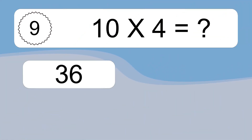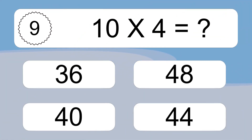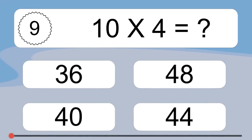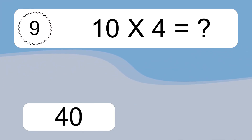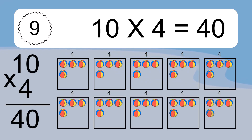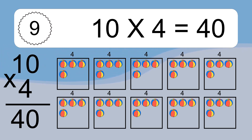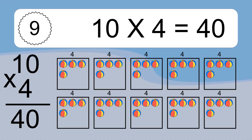10 times 4 equals what? 10 times 4 equals 40. We have 10 boxes, and each box has 4 colorful balls inside. If you count all the balls in all the boxes together, you will have 10 times 4 balls. This equals 40 balls.